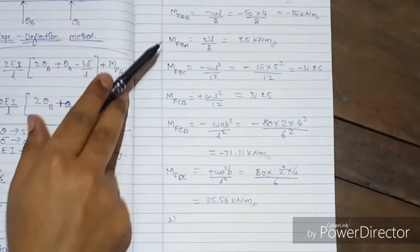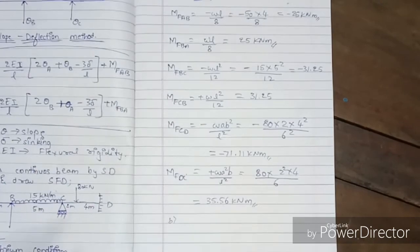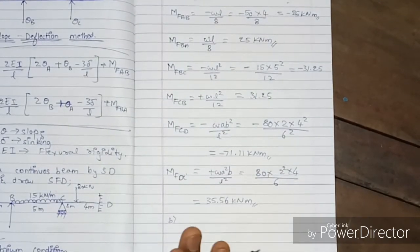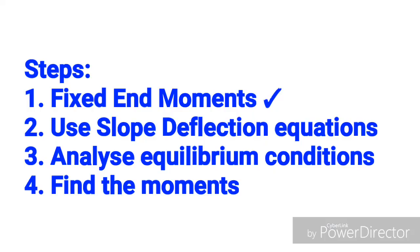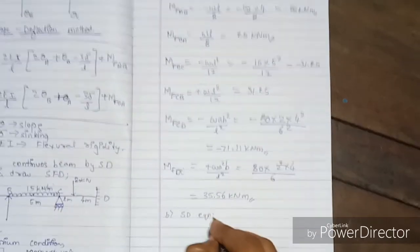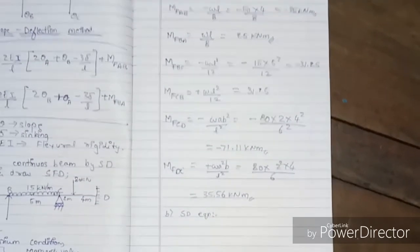So these are the fixed end moments we have found: MF_AB, MF_BA, MF_BC, MF_CB, MF_CD, and MF_DC. Next, we use the slope deflection equations.